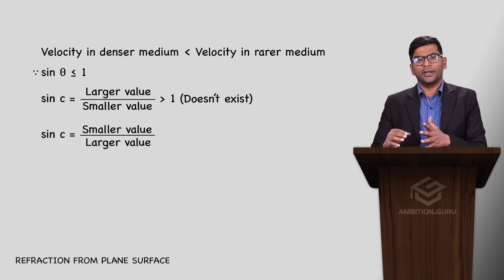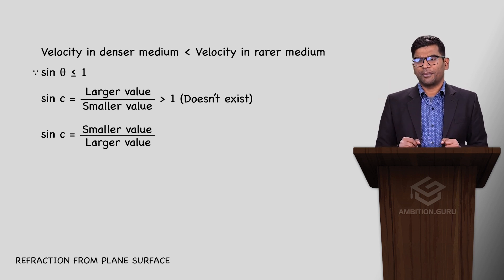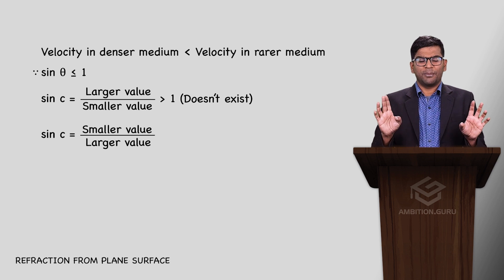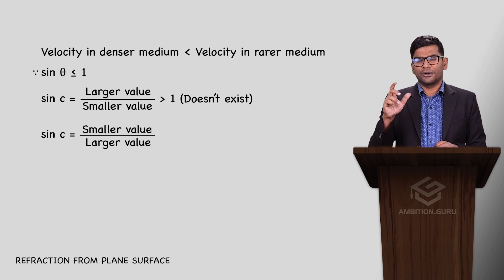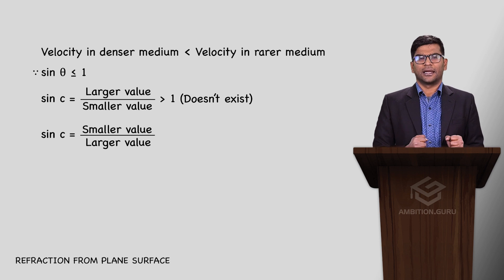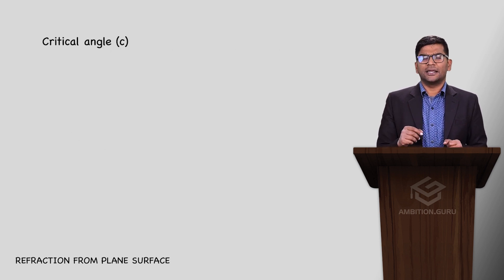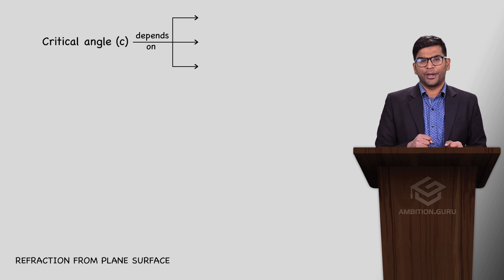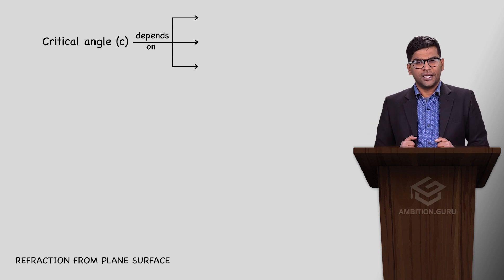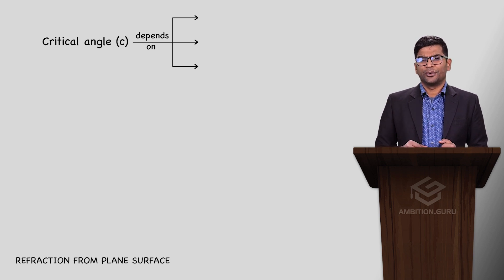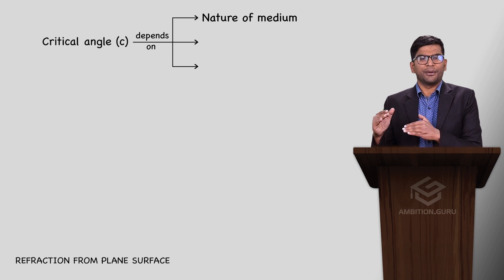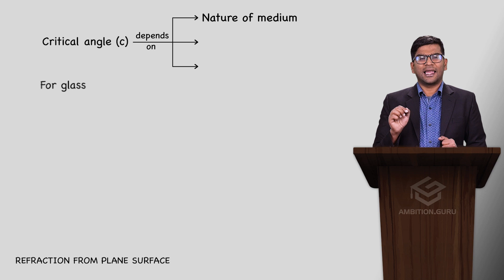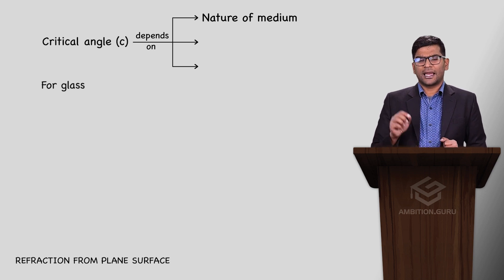So the formula is: velocity, wavelength, refractive index - sin c equals the smaller value upon the larger value. The value of critical angle depends on the nature of the medium.